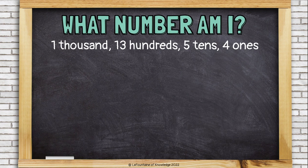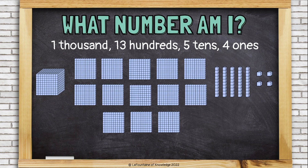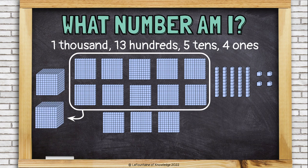Let's play a game called 'What number am I?' Here I have 1 thousand, 13 hundreds, 5 tens, and 4 ones. We can show this amount using base 10 blocks like this. But it's a little tricky to decide what number this is, because I have so many hundreds — I can't put a 13 in the hundreds place. I have to regroup to figure out what number this is. I see 10 hundreds here. I know that 10 hundreds is really just another group of 1,000. So let's turn 10 hundreds into a 1,000 block.